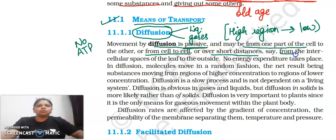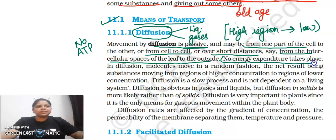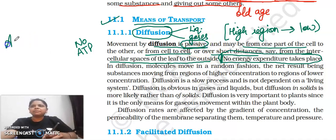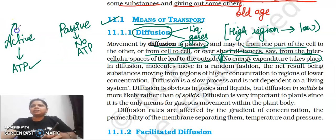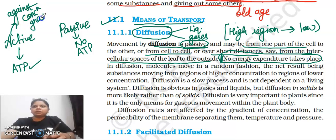Diffusion works over short distances, and from intercellular spaces of the leaf to the outside — no energy expenditure takes place. Remember: any active process requires ATP, whereas passive process has no ATP requirement. Active transport works against the concentration gradient — from lower to higher concentration — while passive transport works towards the concentration gradient, from higher to lower.